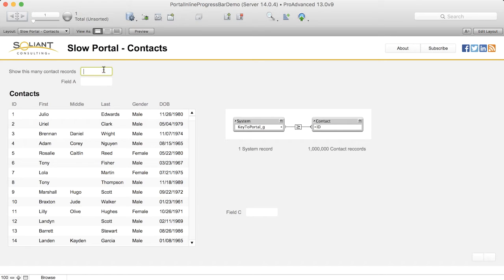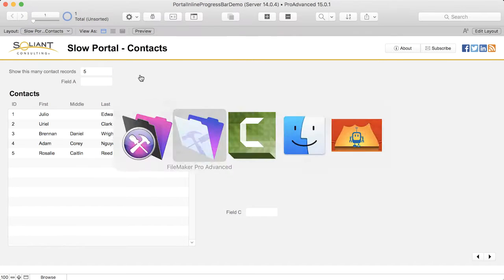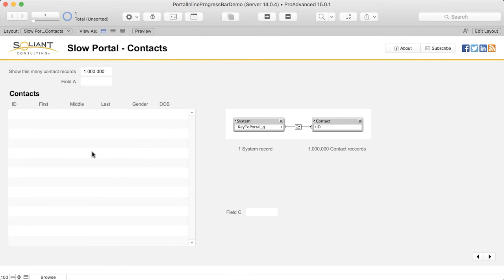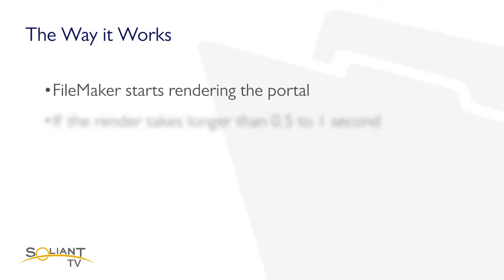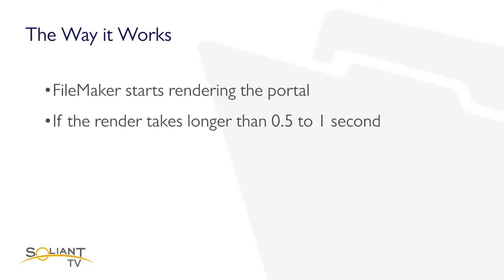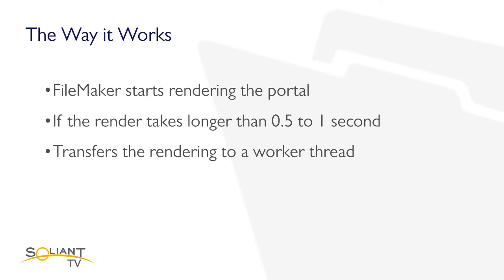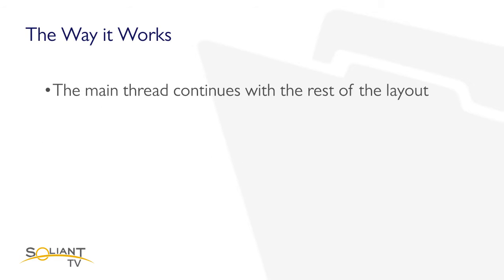Let's see how this works now with FileMaker 15. After a half second or so, we see a progress bar. The way it works is FileMaker starts rendering the portal and if it takes longer than a half second or maybe a full second or so, then it transfers that work onto a worker thread and the main thread continues on with the rest of the layout. In so doing, FileMaker returns control to the user much more quickly.